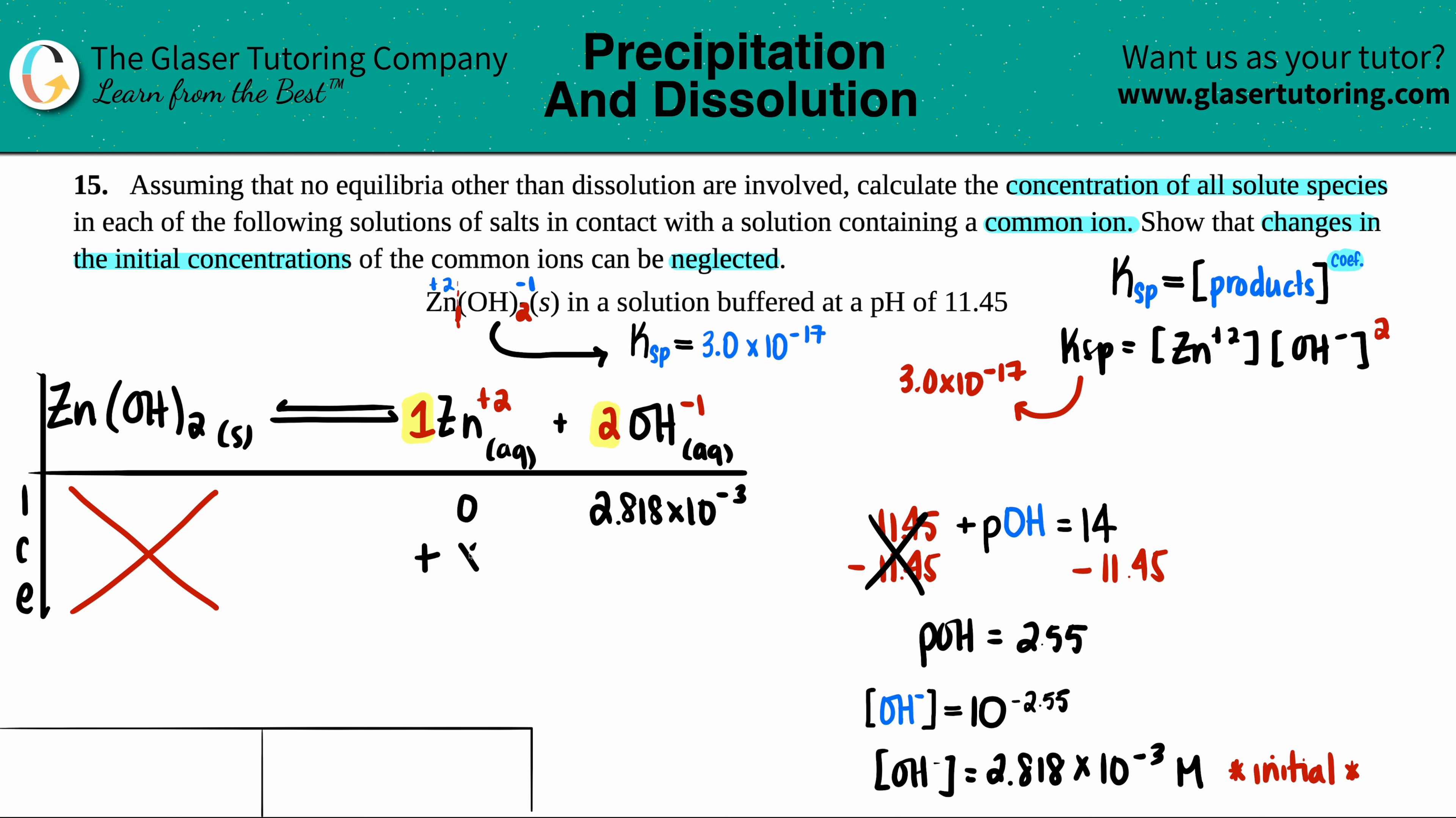C stands for change. The amount that this concentration is going to change. That we don't know, but we usually just use this as a plus because I started off with nothing. And then we just fill it with X's. So this would be plus X because I only had one of them. And this would be plus 2X. They have to coordinate with their coefficients. And then equilibrium, you just bring the initial and the change together. So zero plus X is X. And then 2.818 times 10 to the negative 3rd plus 2X.